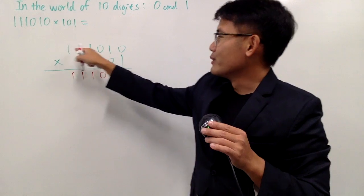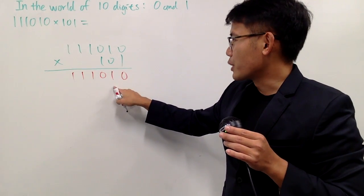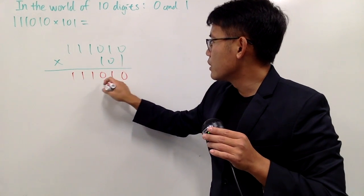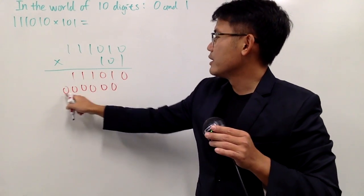And next, zero times all this, you pretty much get all zero. But you have to remember that this is in the second place. So be sure to start right here. So zero times all this, you have 0, 0, 0, 0, 0, 0, right? Six things right here, six zeros right here.